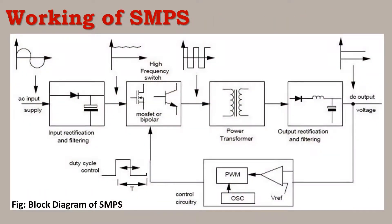Now let's look at a simple block diagram of SMPS. This is an AC to DC type converter SMPS. When you apply AC input, it goes through the input rectification and filter section, then a MOSFET high-frequency switching circuit, then a power transformer, then output rectification and filtering, giving a regulated DC voltage output.